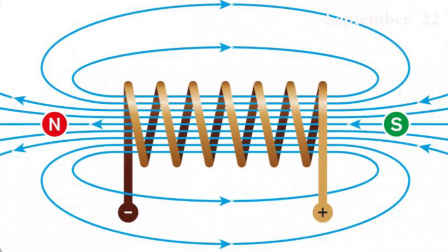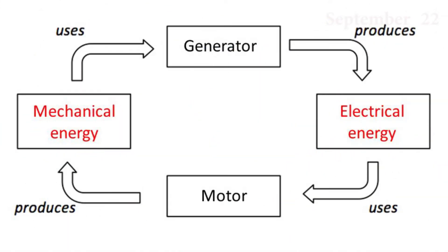Michael Faraday was the first scientist to understand the magnetic field produced when current flows through a wire and constructed an apparatus to prove the same. This converted electrical energy into mechanical energy and was called the electric motor.